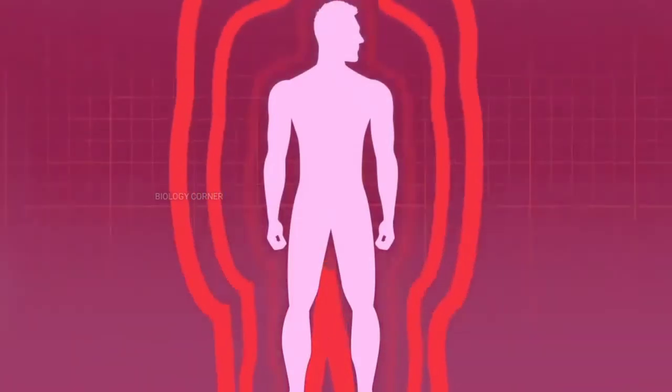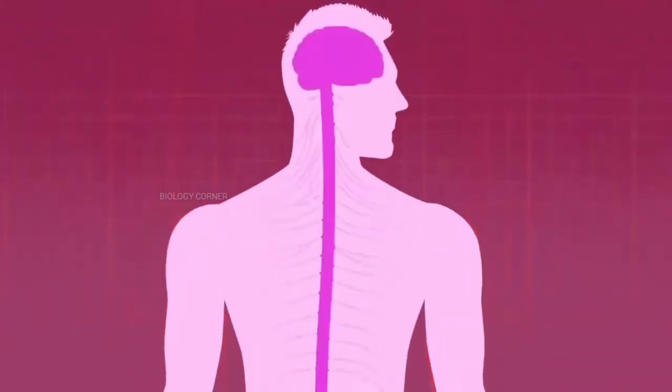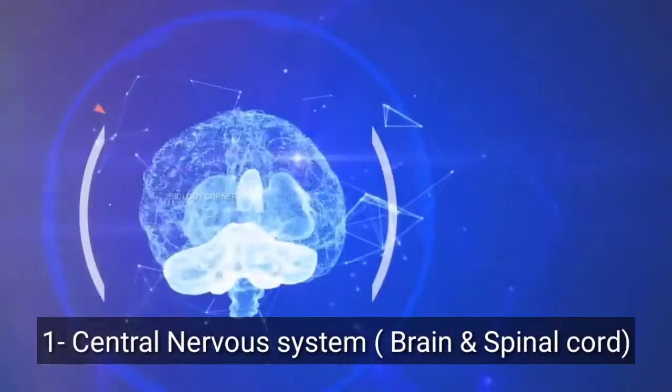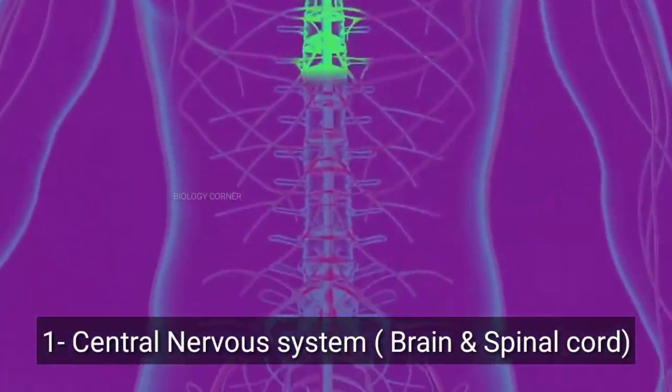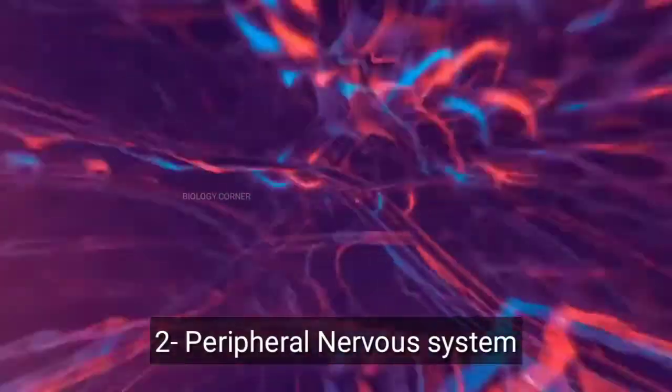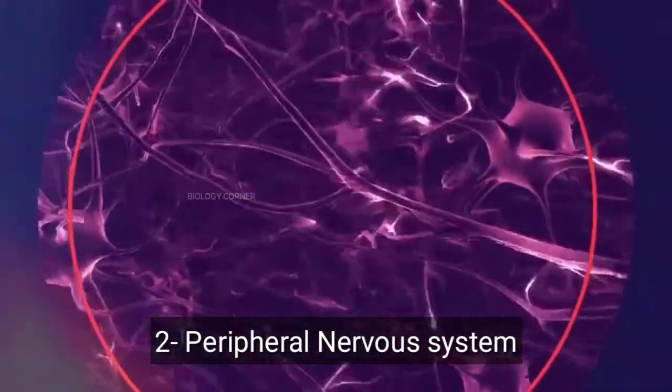The human nervous system consists of two parts. Number one, central nervous system consists of the brain and spinal cord. Number two, peripheral nervous system includes all the nerves of the body.